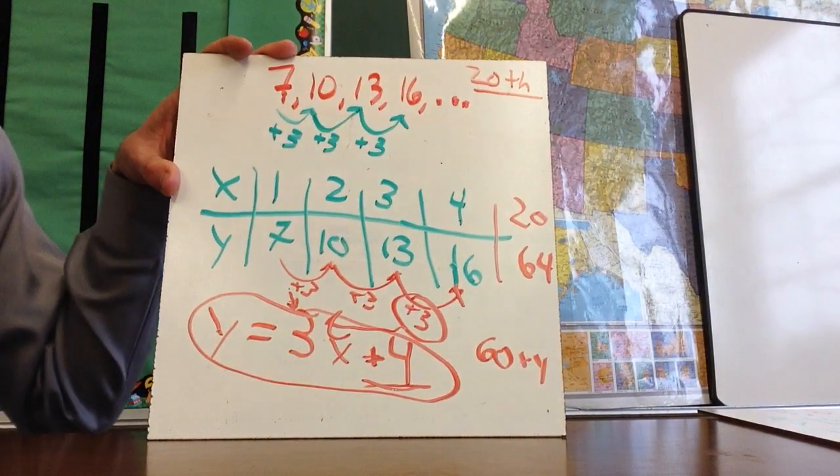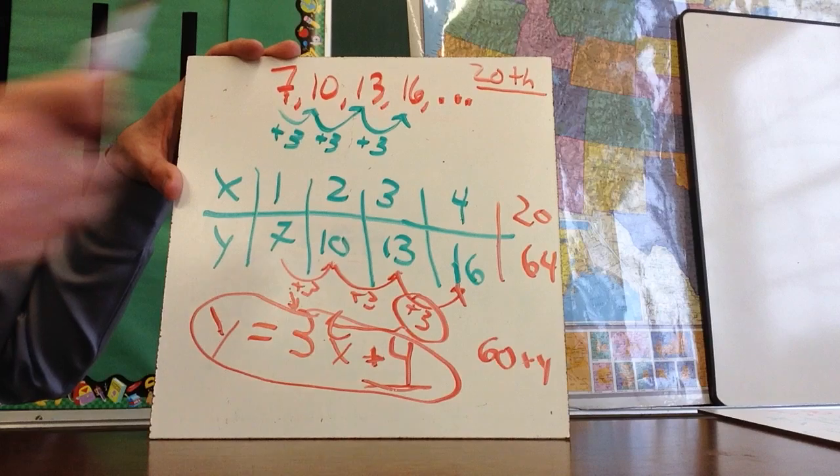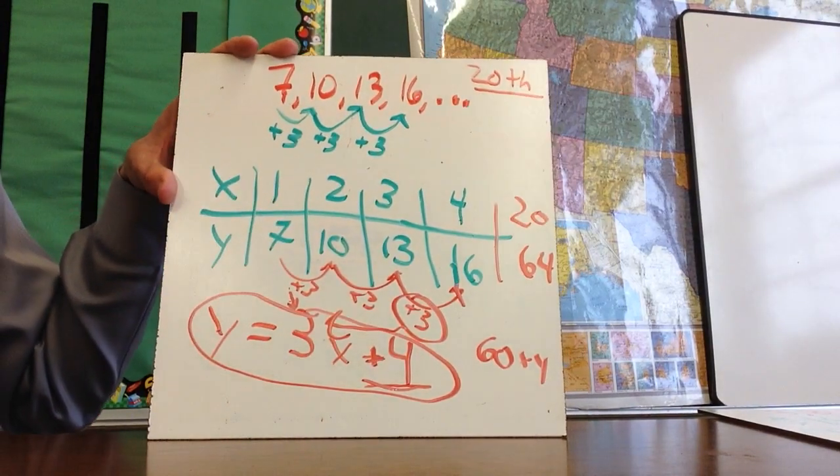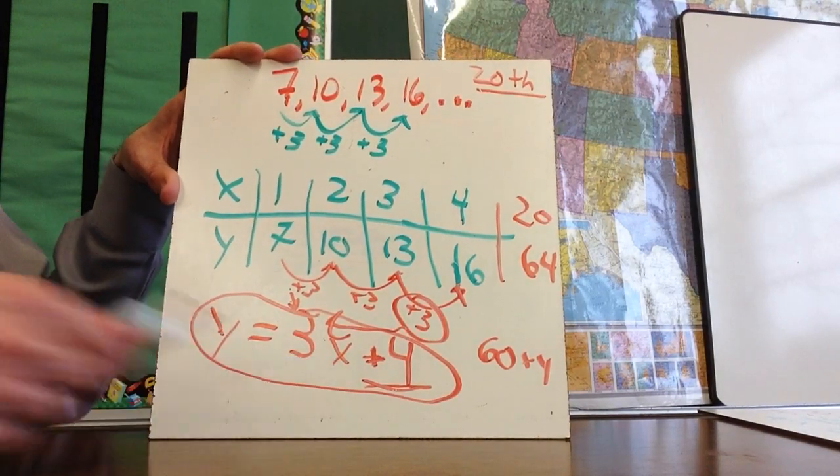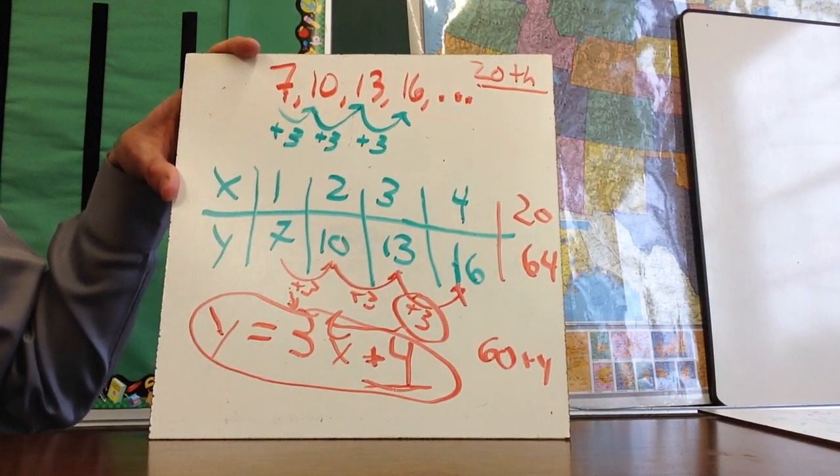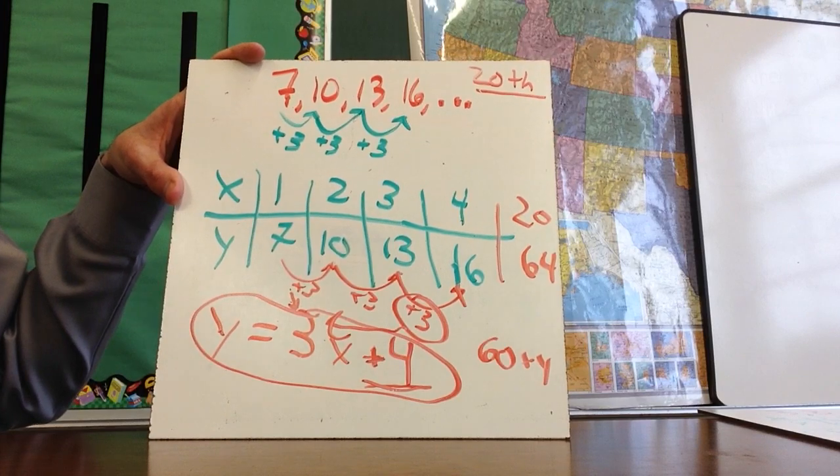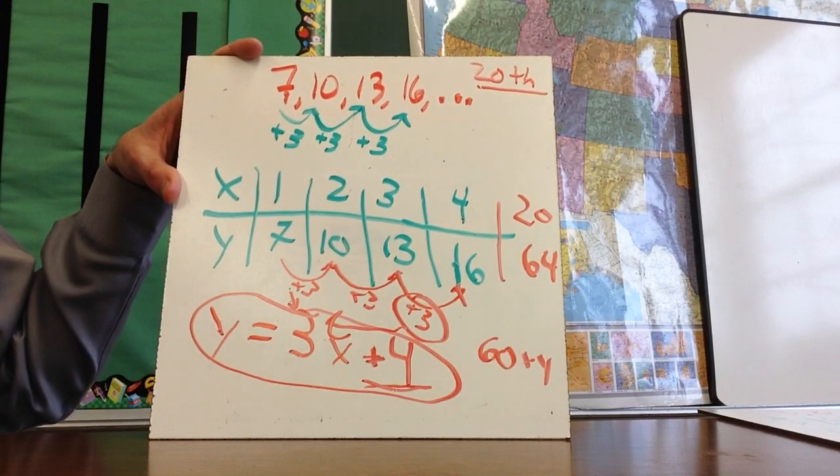Now remember, this can be anything. It could be five, which would be the next term. It could be 1,000, which would be the 1,000th term. It doesn't matter what this number is because once you have the formula, this is an easy substitution, very similar to the function equations you were working on yesterday.